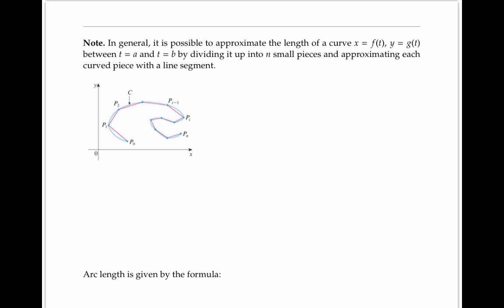If the curve is given by the parametric equations x equals f of t and y equals g of t, then we can write each of these points along the line in terms of f and g. For example, p of i minus one, we can write as the x coordinate f of t i minus one, and the y coordinate g of t i minus one.